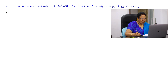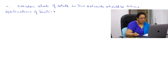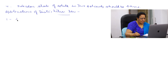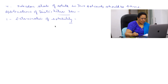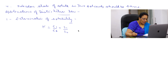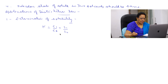Next is the applications of distribution law. Using the formula K = C1/C2 = S1/S2, if the value of K and the solubility of the solute in one solvent are given, then we can calculate the solubility of the solute in the other solvent.